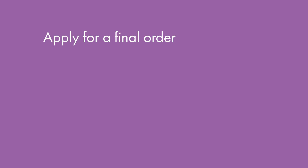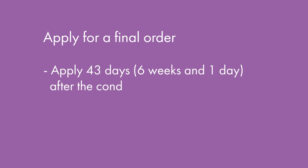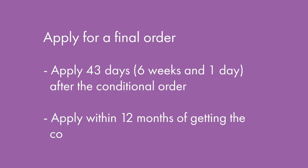Stage 6: Apply for a final order. To legally end your marriage, you must apply for the final order, which can be done via the online portal. You will need to wait at least 43 days — 6 weeks and 1 day — after the date of the conditional order before you can apply to end your marriage. You can apply for a final order as a sole applicant even if you started the divorce process jointly. It is preferable to apply for the final order within 12 months of getting the conditional order; otherwise you will have to explain to the court the delay.